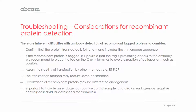You may want to assess the stability of transfection by other methods, for example by RT-PCR. You may find that your transfection method requires more optimization, so it's worth revisiting that. It's very important to include an endogenous positive control sample and an endogenous negative control — this will show you whether it's the transfection that's the problem. For examples of positive and negative controls, you can look at individual antibody data sheets.